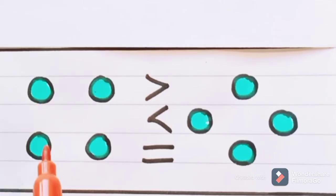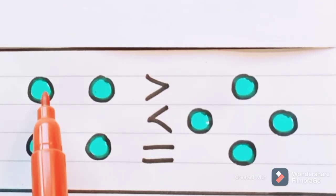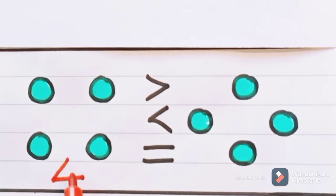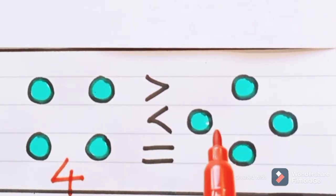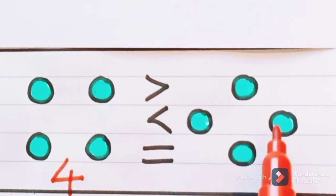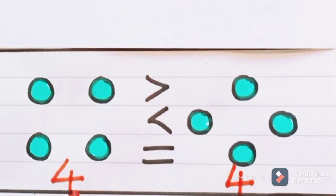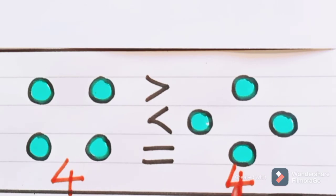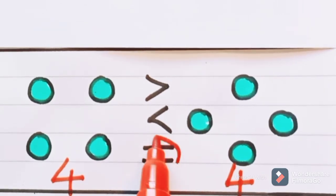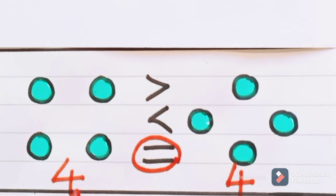Now look at here. How many circles are there? One, two, three, four — there are four circles. And here also one, two, three, four. Here also we have four. So all these numbers are the same. Four is same as four. For same numbers, we will use equal to symbol. Four is equal to four.